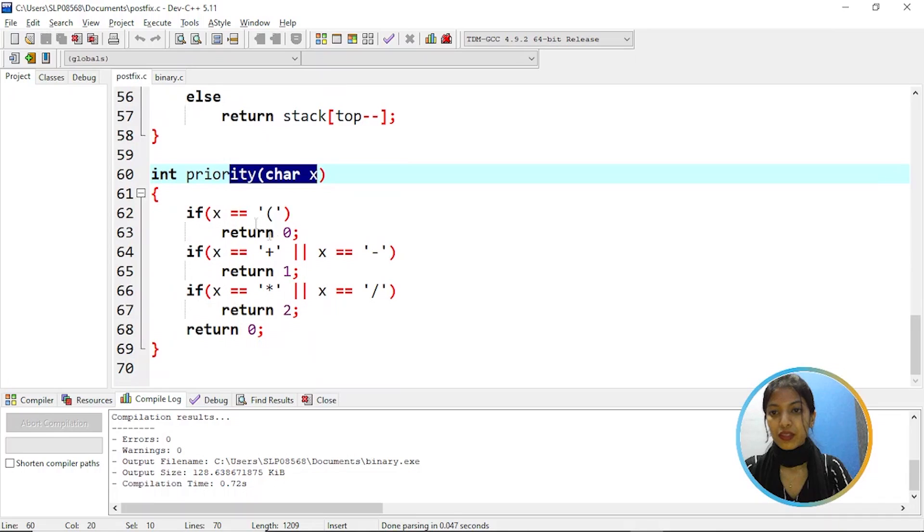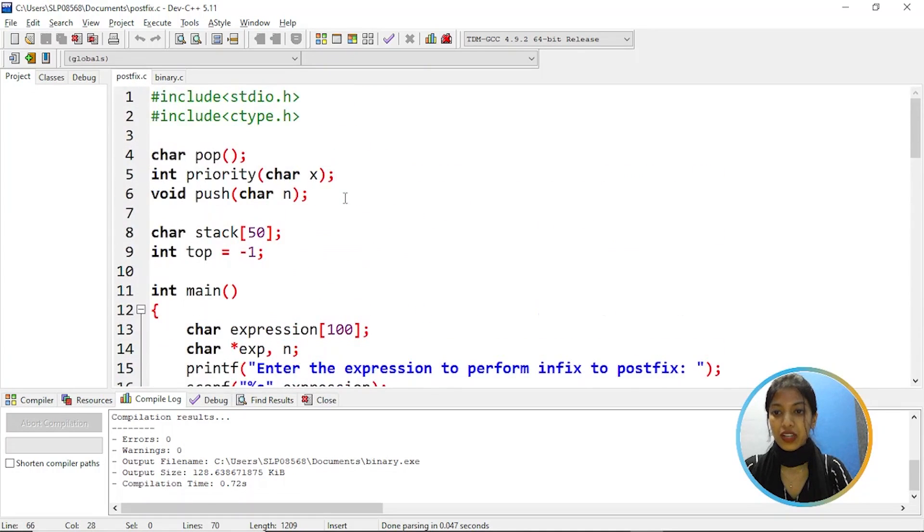Then coming to priority function, check the condition if x is equal to open parenthesis then return zero. If x is equal to plus or minus then return one. If x is equal to into or divide by then return two. That means the priority of plus and minus are same and into and divide by are same. Then going to main function.